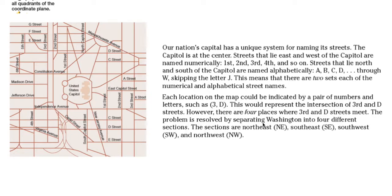The problem is resolved by separating Washington into four different sections: northeast, southeast, southwest, and northwest. So if I say 3rd and D street southeast of the capital, I would mean this particular intersection. If I say 3D southwest of the capital, I would look at this particular intersection right here. And that's how you figure out what 3rd and D street means, depending on what section it's located in.